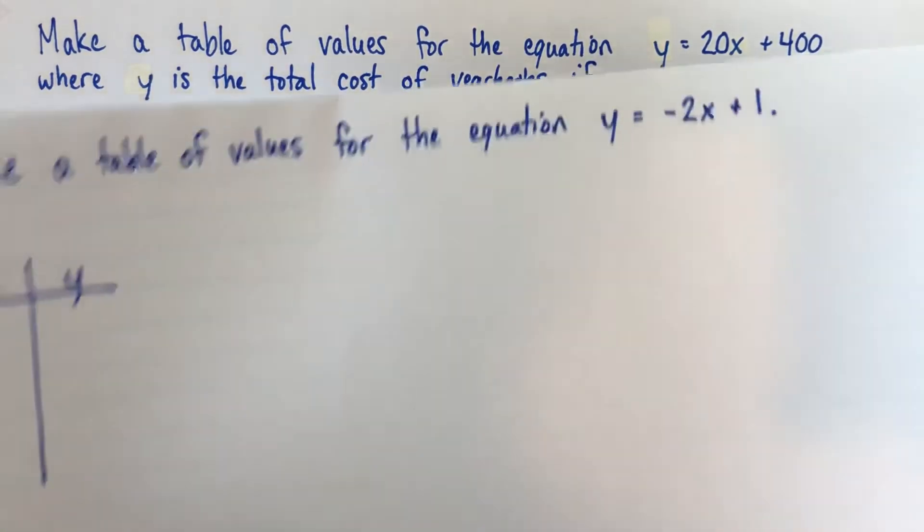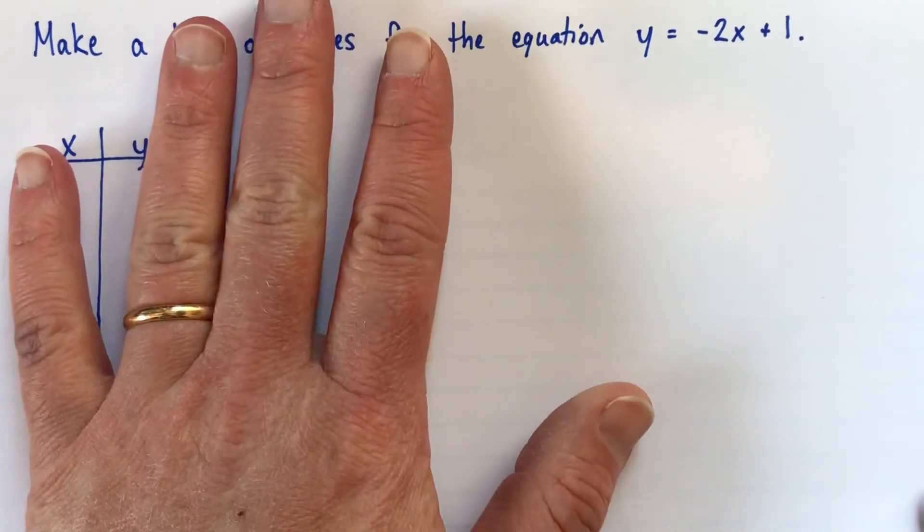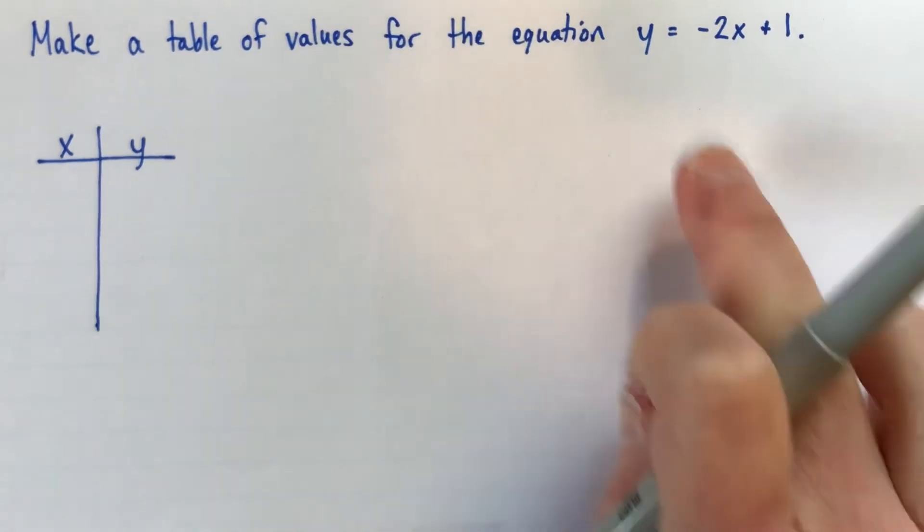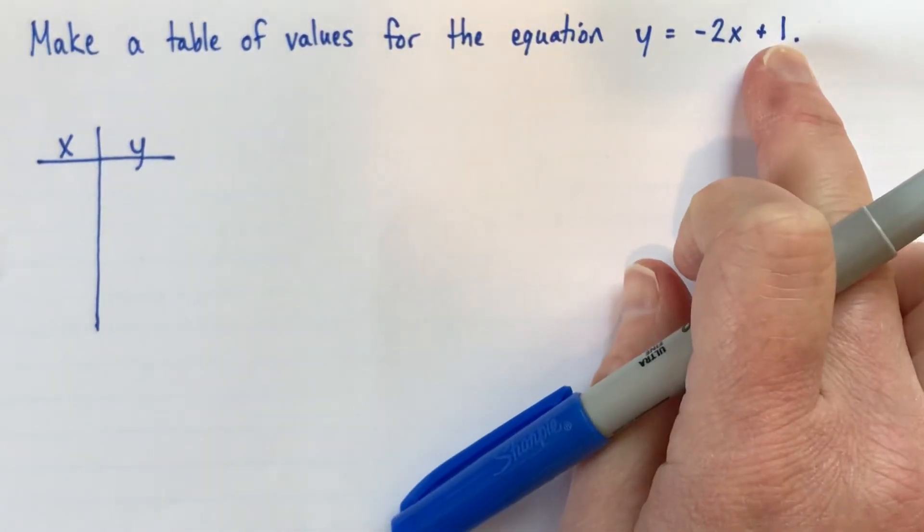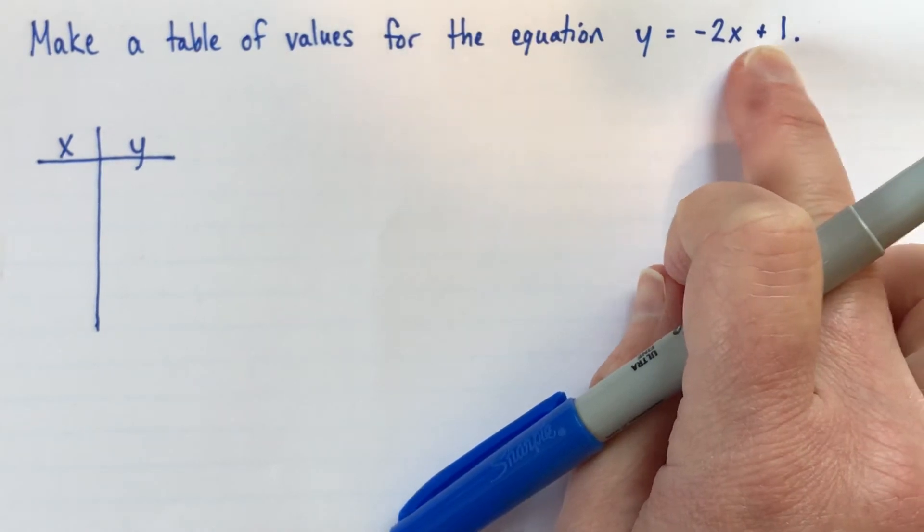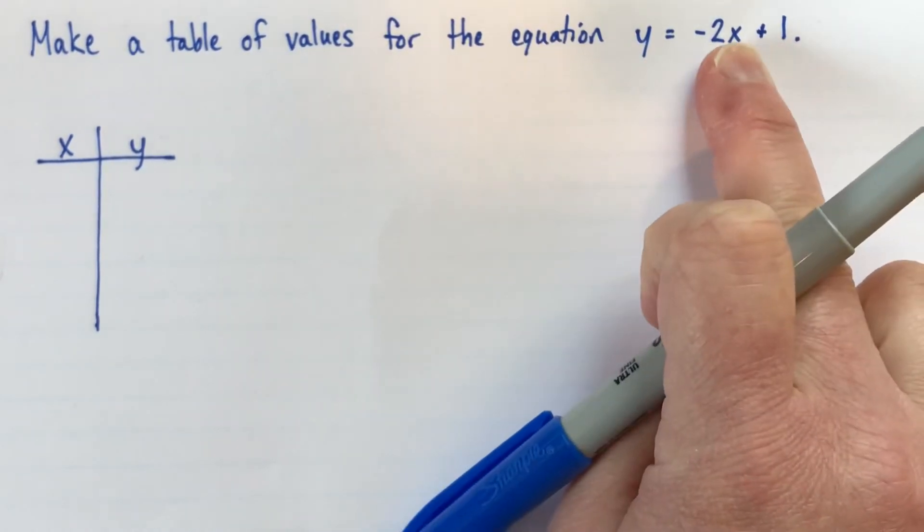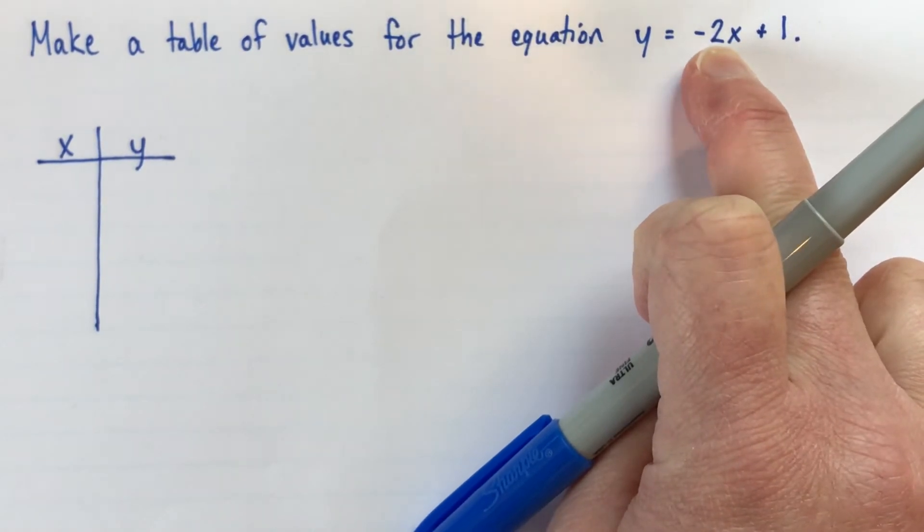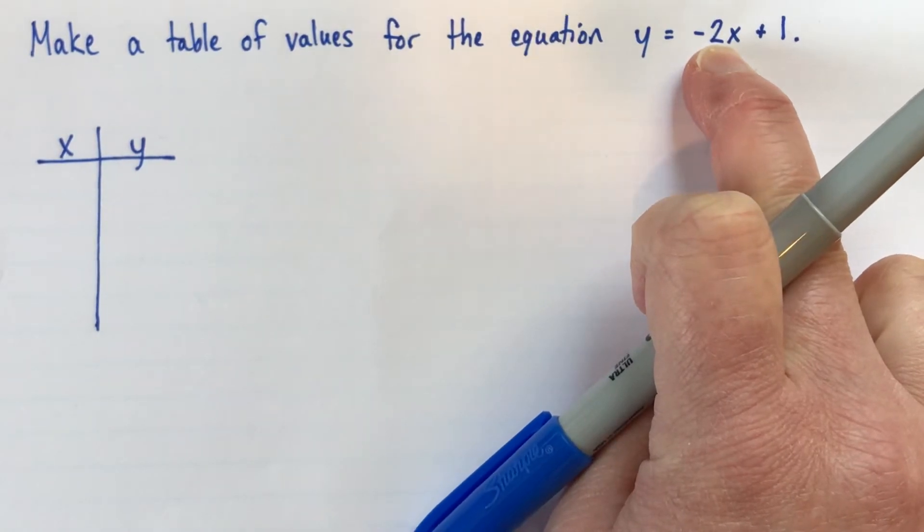Alright, let's do another example. I'm just going to tape this on over top. Alright, in this case we have the equation y equals negative 2x plus 1, and there's no context for this. So we can sort of choose any x and y values that we think will give us information about this equation.